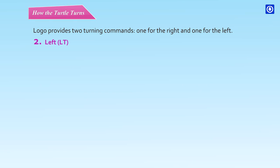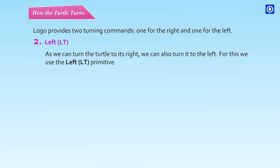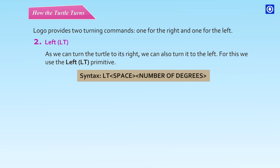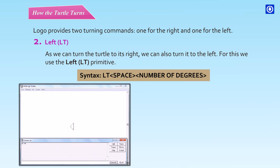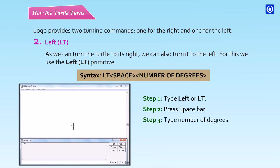Left (LT): As we can turn the turtle to its right, we can also turn it to the left. For this we use the Left LT primitive. Syntax: LT space number of degrees. Step 1: Type 'left' or 'lt'. Step 2: Press spacebar. Step 3: Type number of degrees. Step 4: Press Enter.